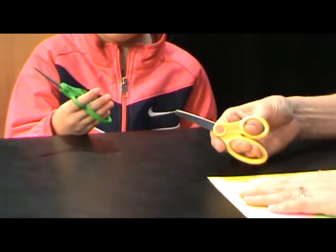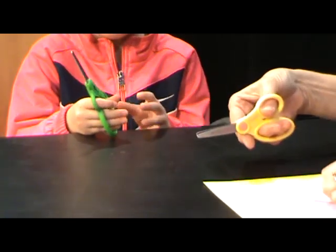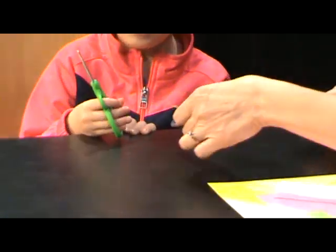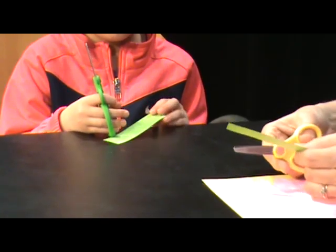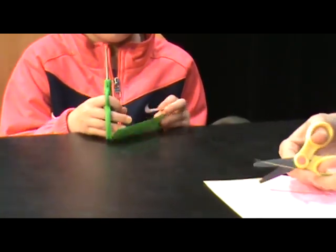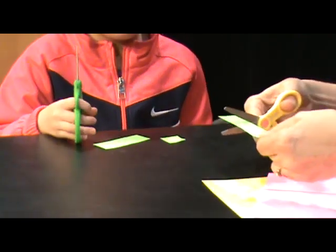Next, when we cut, we call it thumbs up. So, you have to have your thumb on the top, and I'm going to give you a piece of paper, and when you hold that piece of paper, you have to see your other thumb. Can you show me that? Thumbs up, and there she goes, and you can start cutting.